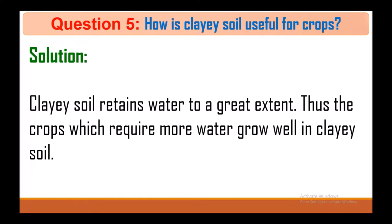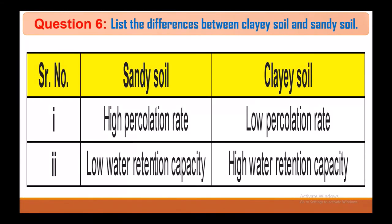Question 5: How is clay soil useful for crops? Clay soil retains water to a great extent, so crops which require more water grow well in clay soil. Question 6: List the differences between clay and sandy soil. Sandy soil has a high percolation rate and low water retention capacity. Clay soil has a low percolation rate and high water retention capacity.